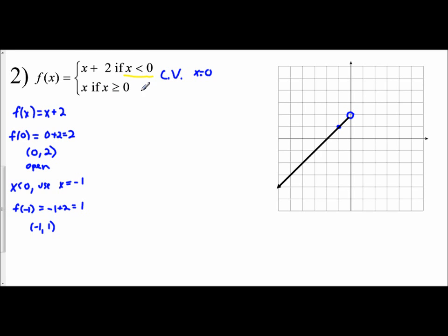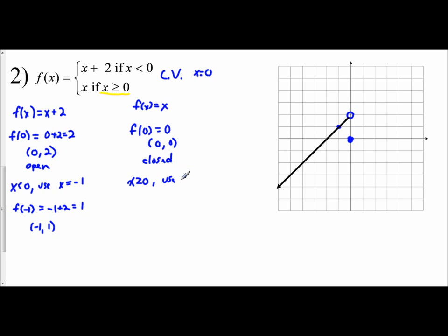Next, f of x equals x. The critical value is again 0, so f of 0 equals 0, giving the coordinate 0, 0. Since x is greater than or equal to 0, this is a closed circle at 0, 0. I then use x equals 1, which gives f of 1 equals 1, so the next point is 1, 1. I start at the critical value 0, 0 and draw the line up through the point 1, 1.